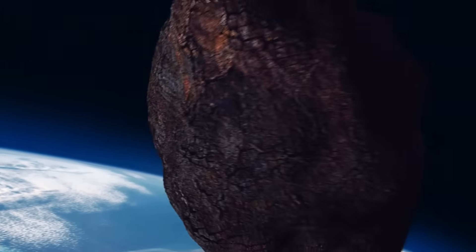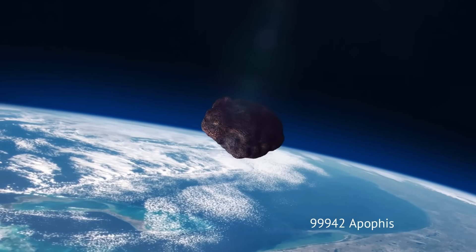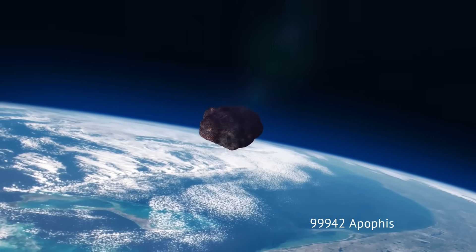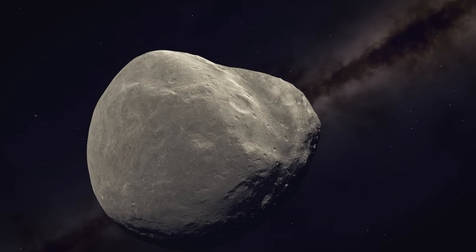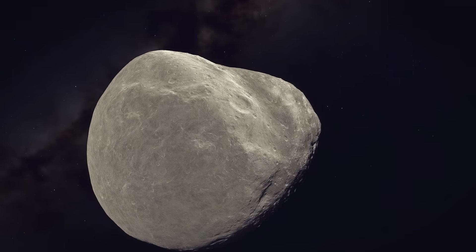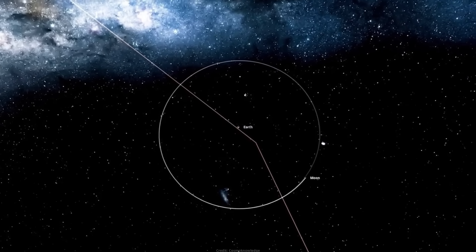The only asteroid ever to have a higher score on the Torino scale was 99942, Apophis. It briefly had a rating of 4 on the Torino scale in late 2004. But the asteroid is now just a 0 on the Torino scale, which means that it has a negligible risk of impact for at least a century.